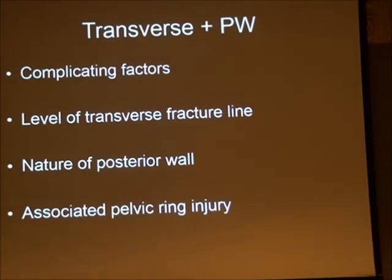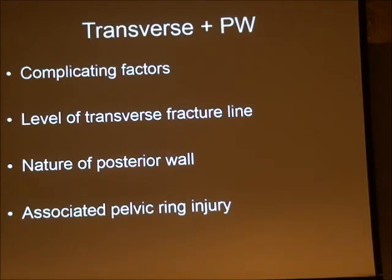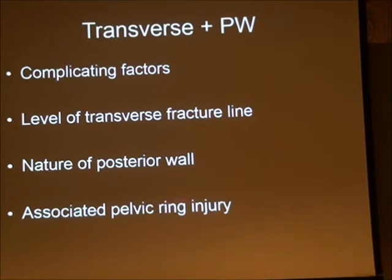The complicating factors for transverse posterior wall fractures include: the level of the transverse fracture line (infratectal, juxtatectal, or transtectal); the nature of the posterior wall fragment — an isolated single piece may be manageable, but an extended posterior wall variety going back to the posterior column with no cortical reed makes reduction much harder through a single approach; and any associated pelvic ring injury, which may require an alternate approach.